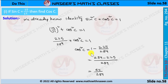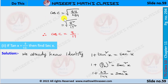We transpose 225 by 289 from LHS to RHS, so cos²c is written as 1 minus 225 by 289. The LCM is 289, so the numerator becomes 289 minus 225. After subtracting we get 64 in the numerator and 289 in the denominator.